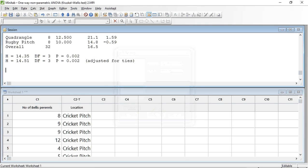As you can see, we now have an output. The H statistic is 14.51. The p-value is 0.002, adjusted for ties. So what does this mean?